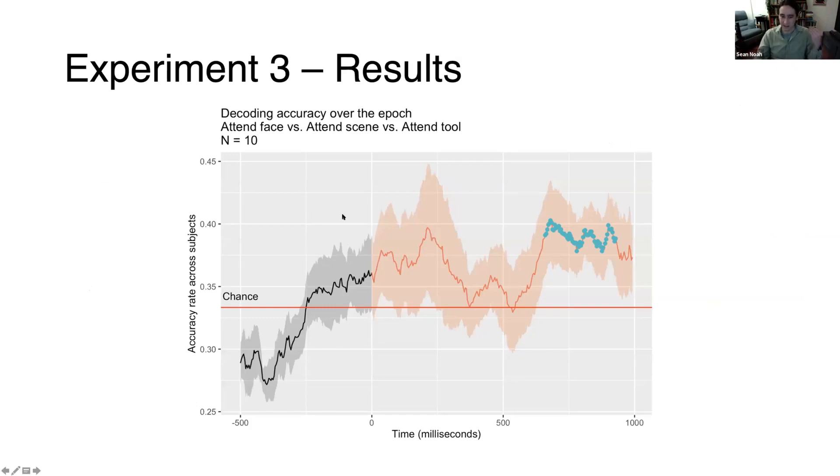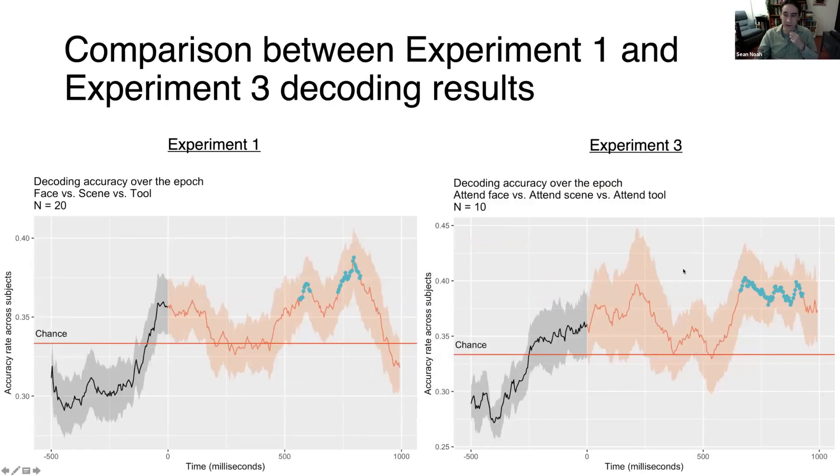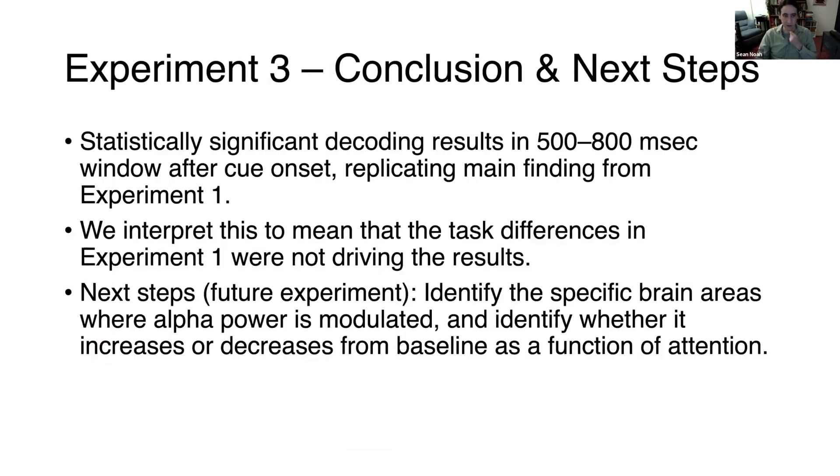The takeaway message here is that when we control for task set so that the task is equalized across all our object categories, we replicate our main result. We get a statistically significant period of alpha band decoding in this late period. When we compare that to experiment one, it even looks a little nicer. I should note that our subject set is a little smaller here because we were collecting this data right up against the very beginning of the shelter-in-place order. Luckily though, it replicated nicely even with a smaller n.